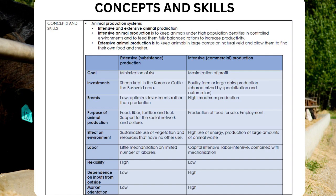Extensive farming is characterized by subsistence goals — minimization of risk. Commercial/intensive farming aims for maximization of profit. Investments in extensive farming include sheep kept in the Karoo or cattle in the bushveld area, while intensive farming involves poultry farms or large dairy production. Intensive farming is characterized by specialization and automation, and optimizes investments rather than just production, targeting maximum output.